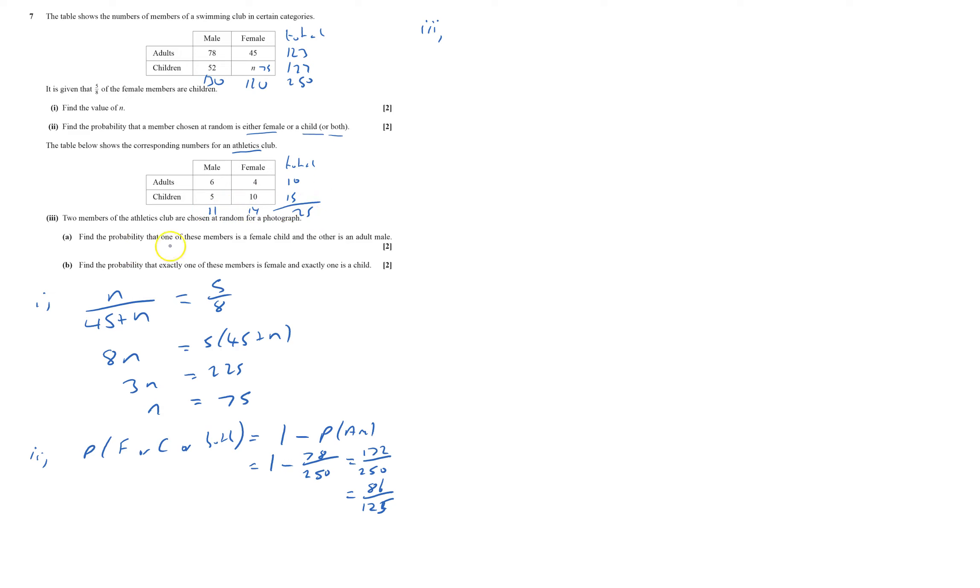And I find probably one of these. Now two members are chosen at random for a photograph. I find probably one of these members is a female child and the other is an adult male. There's lots of different ways of doing this, but I'm going to use a tree diagram. That will explain what I'm doing. It takes quite a long time to do a tree diagram because I've got lots of different possibilities.